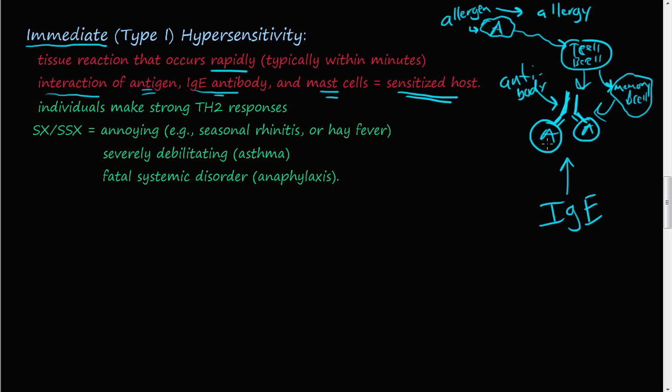The antigen, obviously, is the allergen in this case. In these individuals, they have a genetic predisposition to make a strong helper—this H stands for helper—T cell version 2, or flavor 2 of the helper T cell responses.